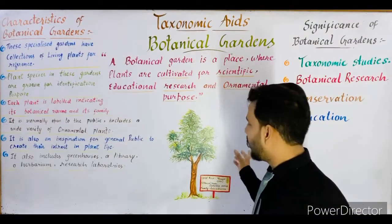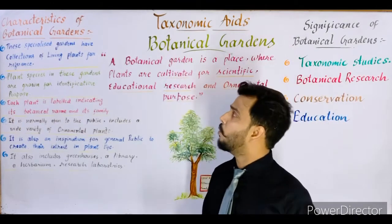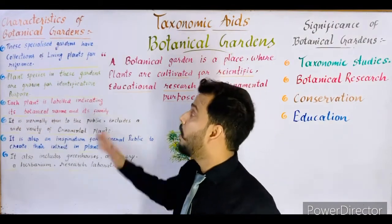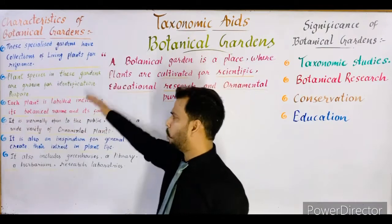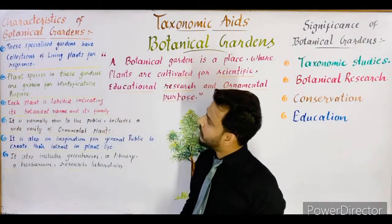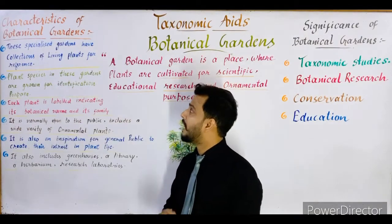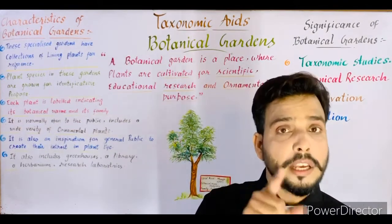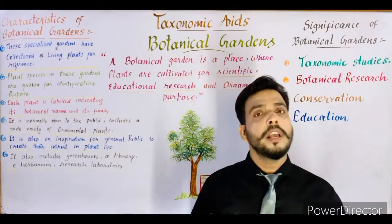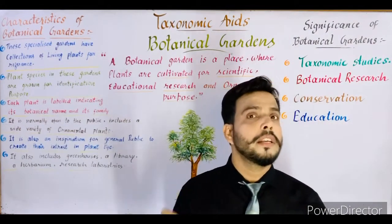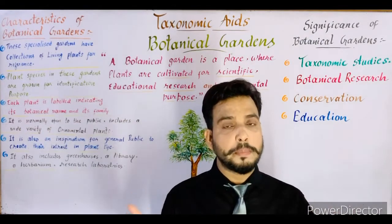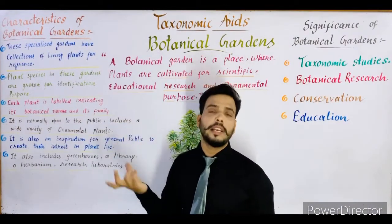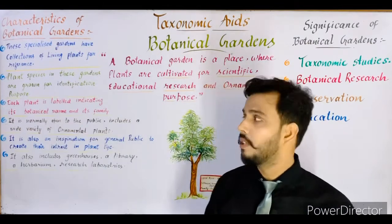Now I will tell you about the characteristics of a botanical garden. The first important point is that these specialized gardens have a collection of living plants for reference. In a herbarium, the collection of dead plants takes place, while in the botanical garden, the collection of living plants takes place. This is the most important difference between a herbarium and a botanical garden.